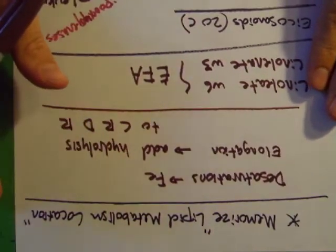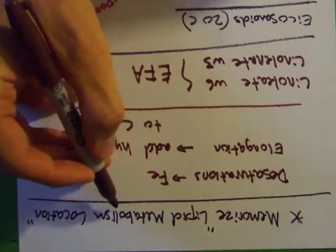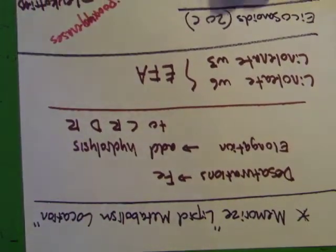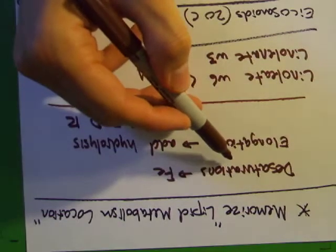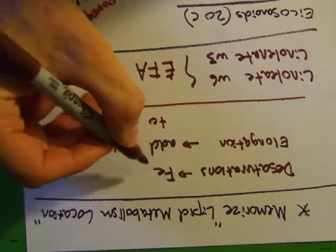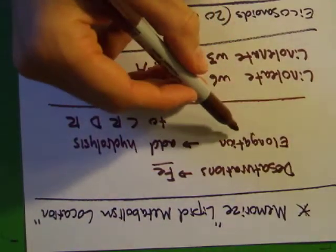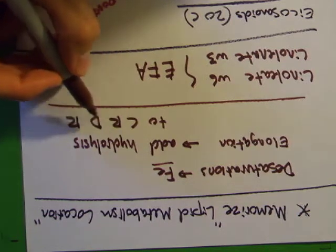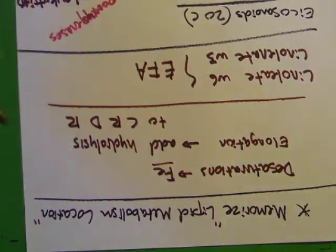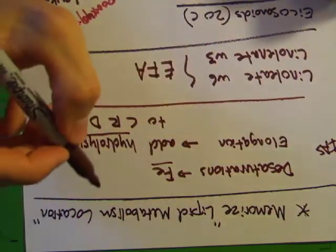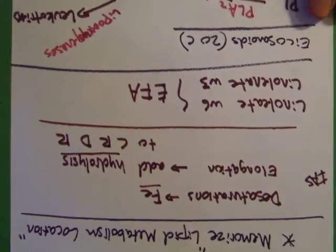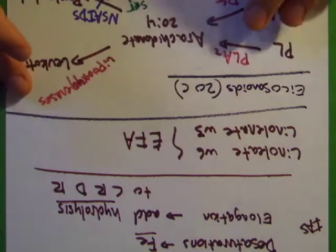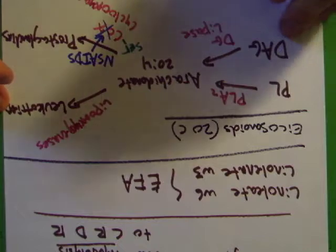There's a chart on lipid metabolism locations — know it well. In addition to knowing where desaturations and elongations take place, know that desaturations involve iron, and elongations go through the opposite of beta oxidation (condensation, reduction, dehydration, reduction) plus an extra hydrolysis step — that's the only time you see that hydrolysis step. There's also a big list of fatty acid synthase enzymatic activities with two-letter abbreviations — memorizing all of that is probably not necessary for the exam.